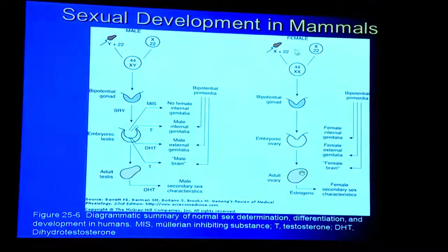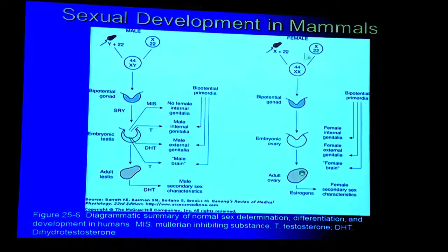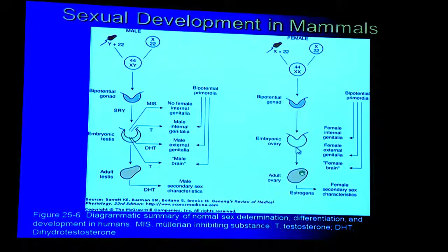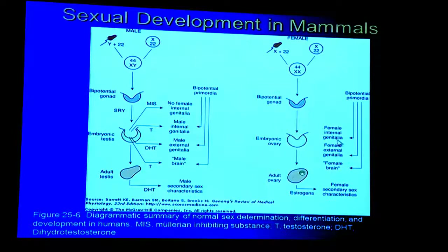In female development, if the sperm that fertilizes the egg has an X chromosome, we get a genetic female — XX — and the gonad will automatically become an ovary. The ovary does not have to produce hormones before birth; the internal genitalia, external genitalia, and the brain develop as they do in a typical female without any hormonal support. The ovaries only put out significant hormones starting at puberty with activation.